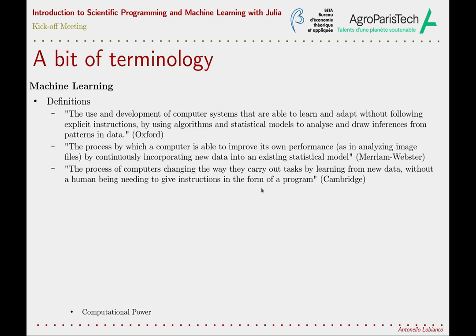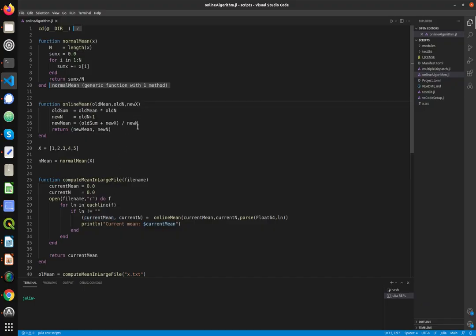There is an emphasis in these last two definitions on continuous learning from new data — online algorithms. I don't feel this is a necessary feature of machine learning, as many machine learning algorithms are not online. Online algorithms do not require the data to be available at the beginning of computation; instead, they adjust and correct their output as data becomes available. Let's consider a simple example included in a file.